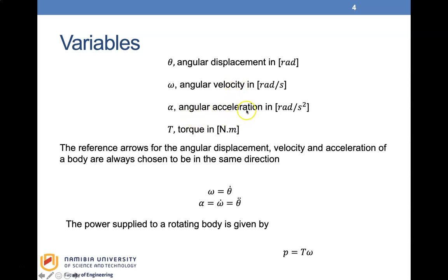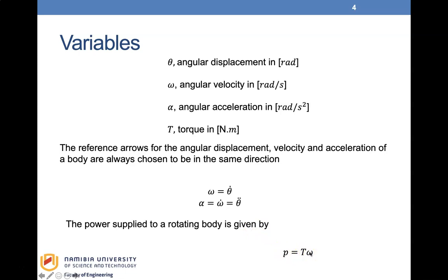These are the equivalents for the rotational mechanical systems. We chose the reference arrows for angular displacement, angular velocity, and angular acceleration of the body to be in the same direction. From dynamics, omega equals theta-dot and alpha equals omega-dot, which is also theta double-dot. The power supplied to a rotating body is p equals torque multiplied by angular velocity.